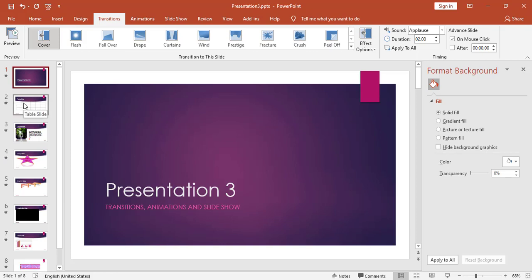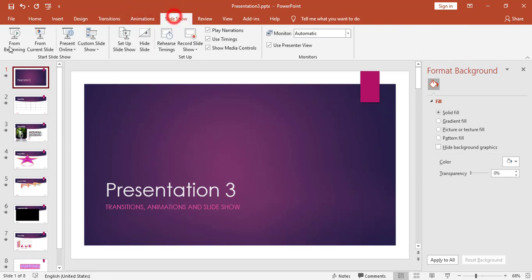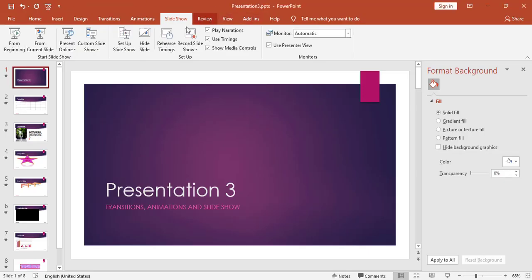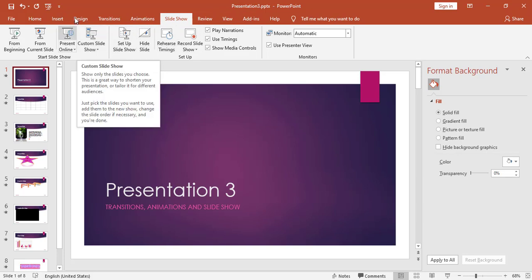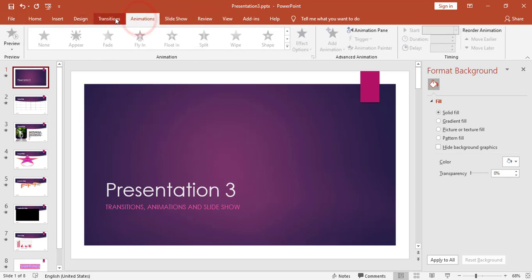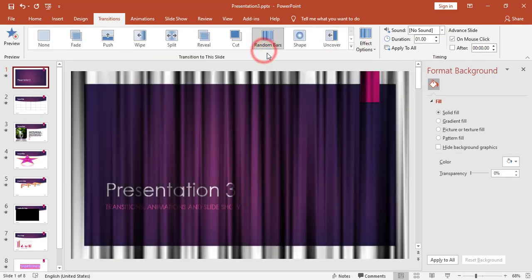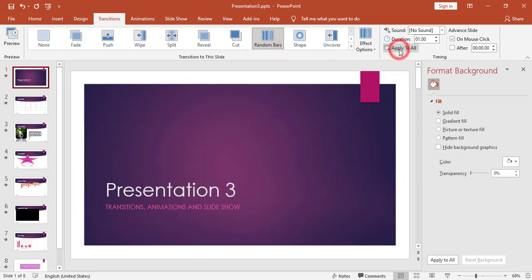Now in the preview panel you can see a star below slide number one, two, and three — the star means that a transition has been applied to that slide. To see the effect I can go to Slideshow and click From Beginning. If I need to edit, I can remove the sound, keep the duration, set it to 1.5 seconds for example, and apply a Random Bar transition, then click Apply to All.